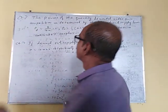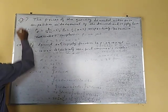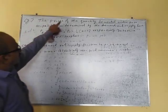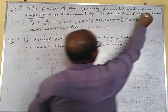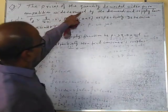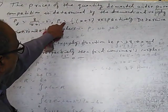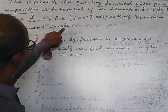Question number 3: the price and quantity demanded under pure competition is determined by the demand and supply law. PD is equal to √(8x+1) minus 2 and PS is equal to half into (x+3) respectively. Determine consumer surplus. Question number 4 is also determined by demand and supply law.